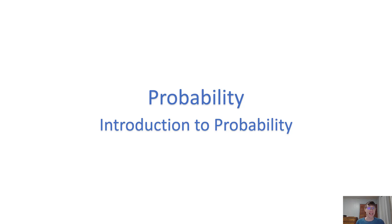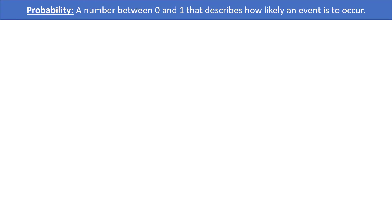Welcome! In this video we get to introduce probability. Probability is a number between 0 and 1 that describes how likely an event is to occur.